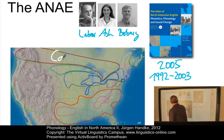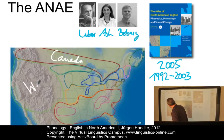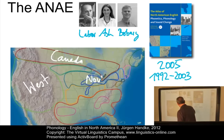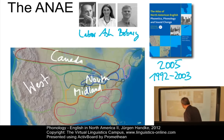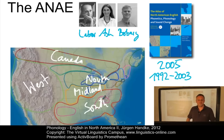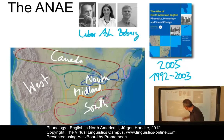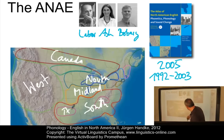First of all, we have the big region of Canada, shown by this red isogloss, then represented in green, the West. The blue isogloss is essentially the North. Then we have the Midland variety. And finally, surrounded by the big South isogloss, the South. These are the main phonological dialects. Other areas include, for example, Texas South inside the South, and another area towards Georgia — the Inland South, and so on.